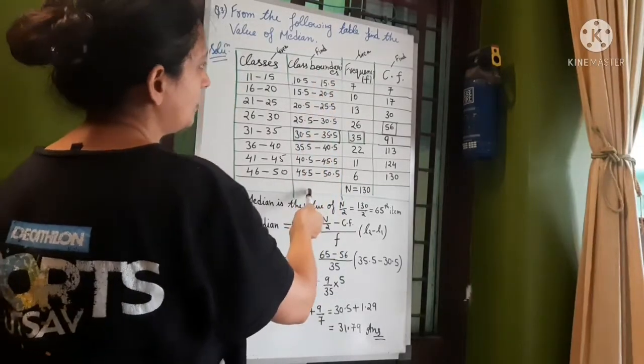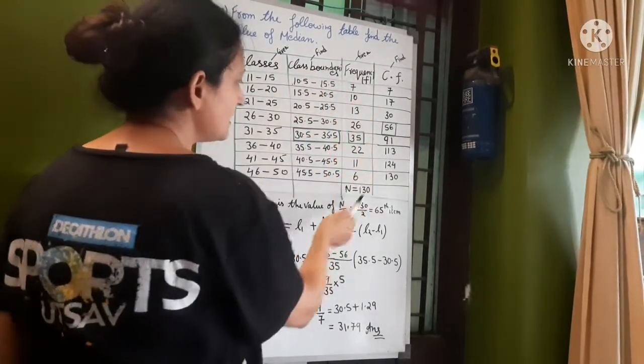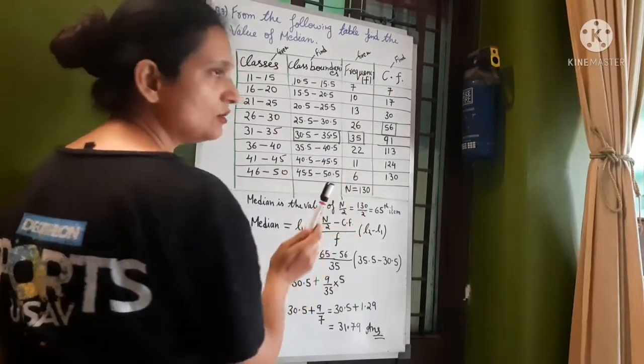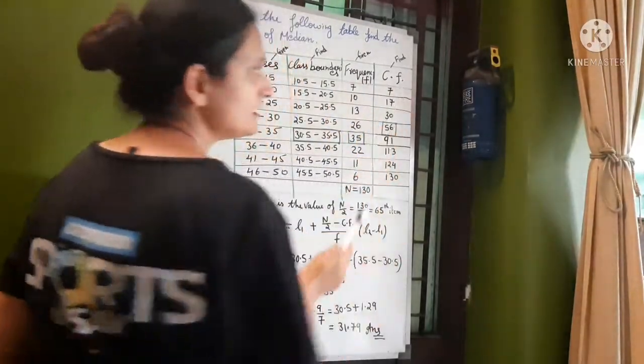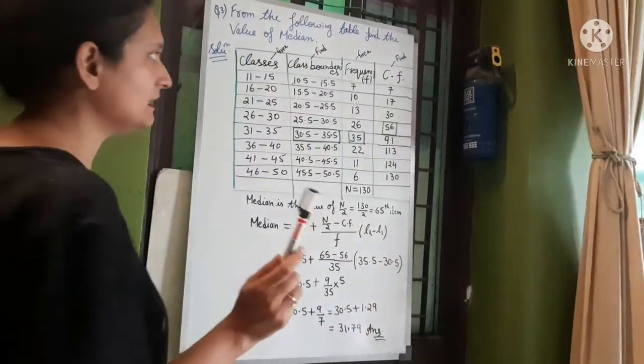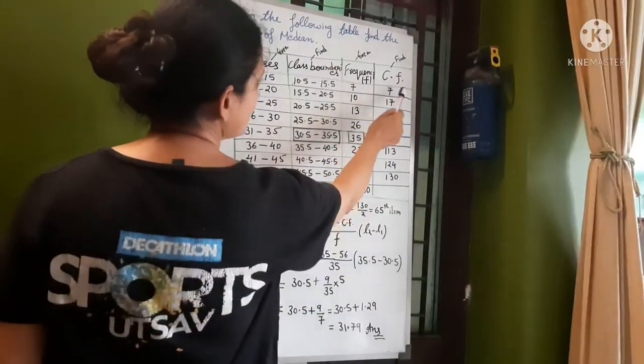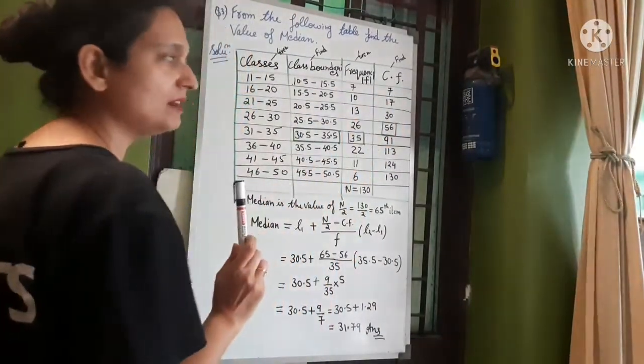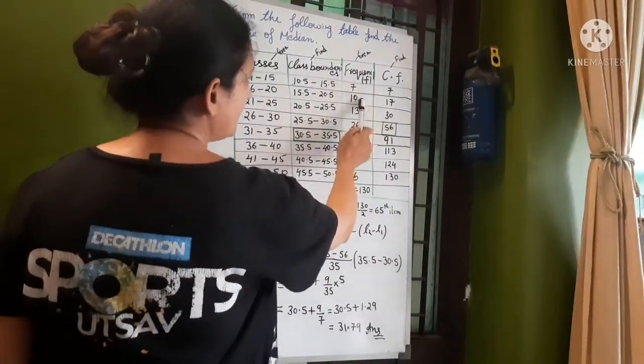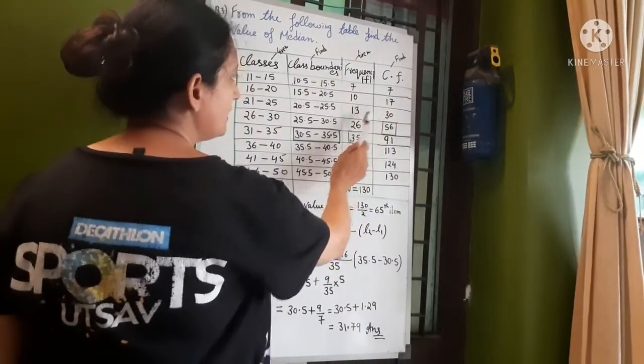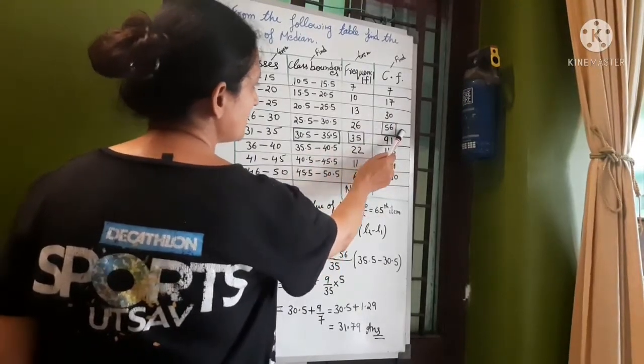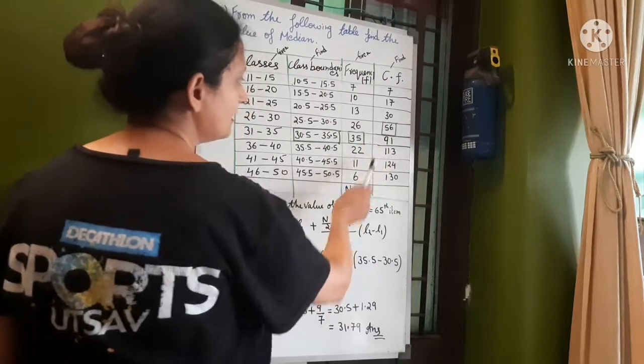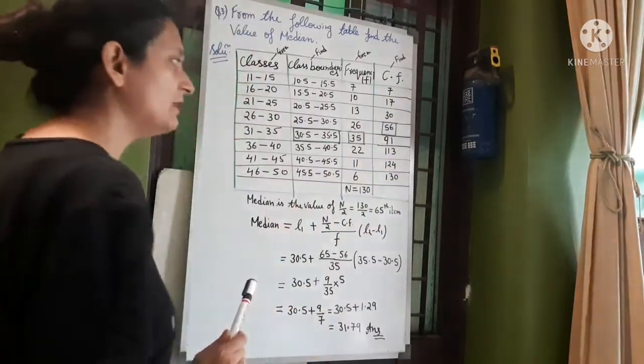All classes you have to take and you have to take from n up to 130. And you have to take all the frequency. When you add the frequency, first the number is 7, 7 add 10 is 17, 17 add 30, 30 add 26 is 56, 35 add 91. This is the cumulative frequency.